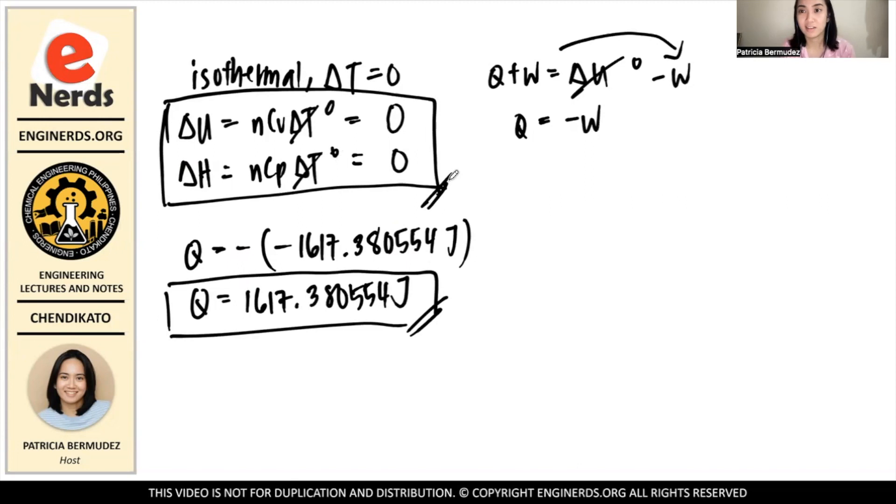You notice a pattern. In an isothermal system, if it is an expansion, then work is negative, the heat is positive, and delta h and delta u are zero. If it's compression, work is positive, but heat is negative. But delta h and delta u will remain as zero in an isothermal closed system.